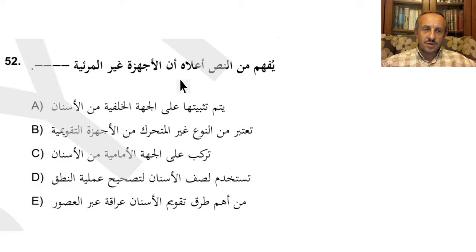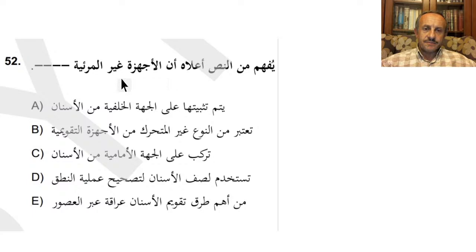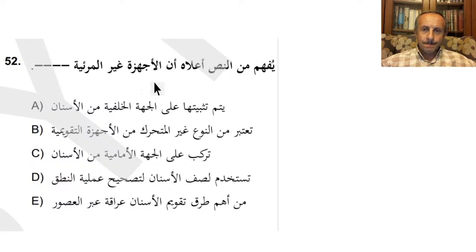'Yufhemu minennassi alahu' – diğer bir soru: yukarıdaki metinden anlaşılıyor ki – 'enneyi ki' diye çevirirseniz öncelikle rahat edersiniz, sonra istiyorsanız daha rafine tercüme için 'ki'yi kaldırıp cümlenin içinde eritirsiniz. 'Ennel eşhizete' – ne diyelim? 'Gayral mer'iyyete' – görünmeyen cihazlar diyor. Mer'i, Ra'a yara'dan geliyor, görünmeyen cihazlardan bahsediyor.